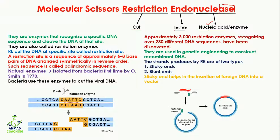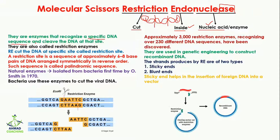The restriction endonucleases are enzymes which are going to cut the nucleic acid from the inside. For example, we have DNA here — the restriction endonuclease will cut the DNA from the inside but not from the corners. That is why they are called endonuclease. They cut the DNA at a specific sequence, not randomly.